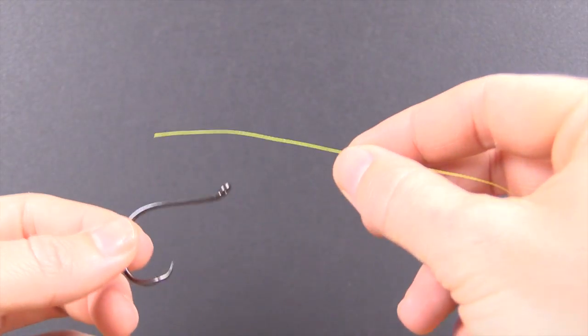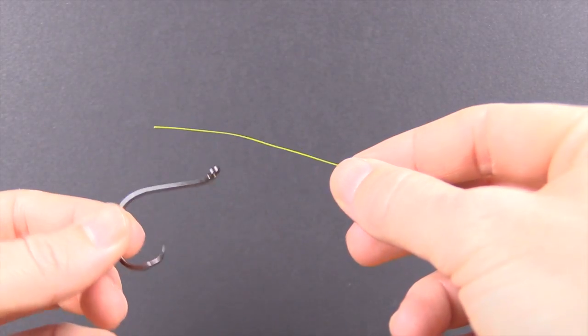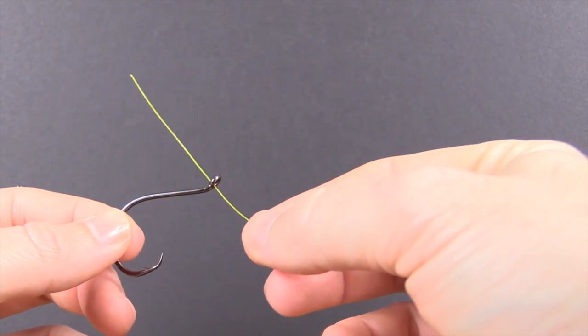In this video, we're going to tie the improved clinch knot. In this case, we're using braided line, so we're actually going to make some adjustments to the typical improved clinch knot. Let's get started, and I'll show you the differences as we go through.